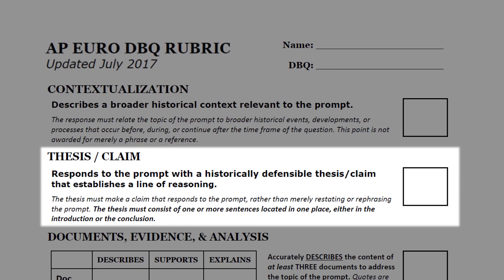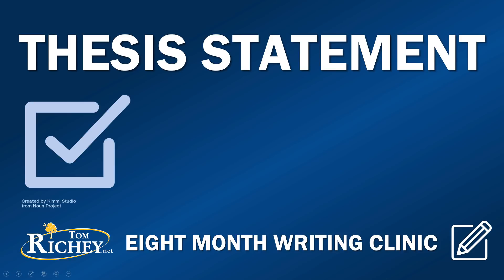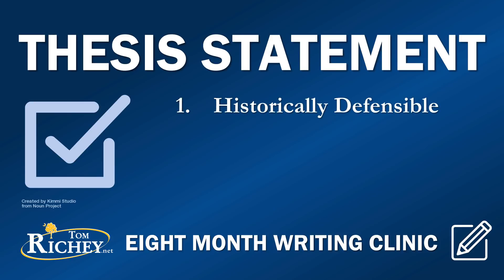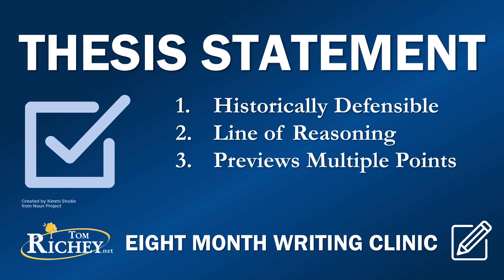First, let's work on our thesis or claim. It responds to the prompt with a historically defensible thesis or claim that establishes a line of reasoning. The thesis must make a claim that responds to the prompt rather than merely restating or rephrasing it. It must consist of one or more sentences located in one place — either in the introduction or the conclusion. It must be historically defensible, meaning it says something true that can be defended with evidence. It must also have a line of reasoning, which means it should preview at least two points, preferably three.